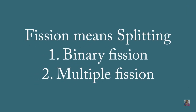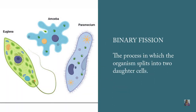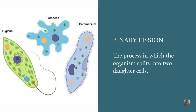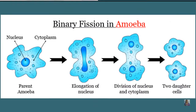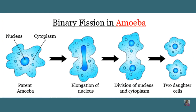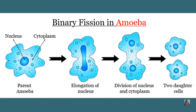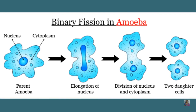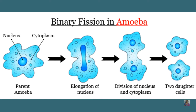Fission means splitting. In this type of asexual reproduction, the unicellular organism splits into two or more separate daughter cells. Examples include amoeba, euglena, and paramecium. Binary fission in amoeba involves the following steps: elongation of the nucleus takes place first, which is followed by the division of the nucleus and cytoplasm, and finally two daughter cells are formed from a single parent.